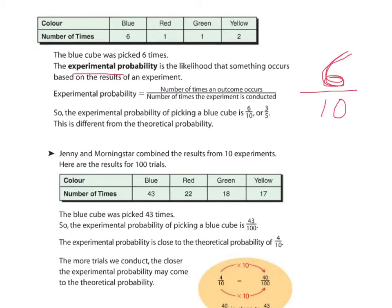Our experimental probability is always the number of times the outcome occurred over the number of times the experiment was conducted. To extend that: how many times was red chosen? The experimental probability of red would be one out of ten, since red was chosen once in ten trials.